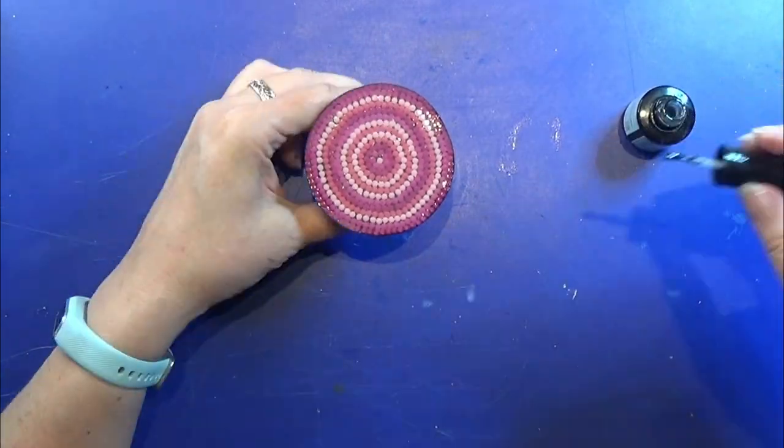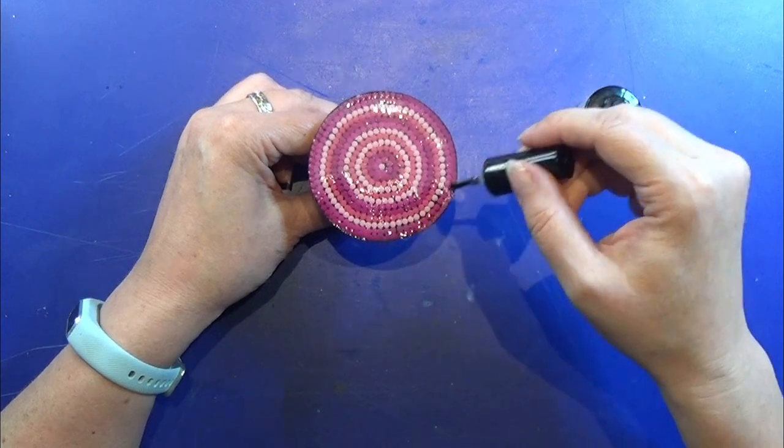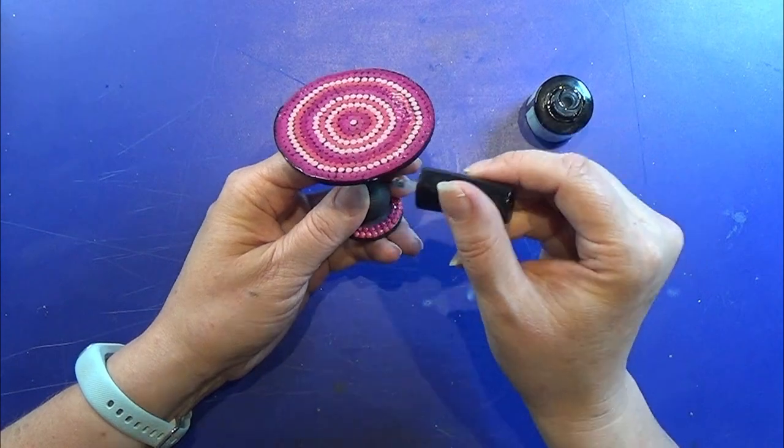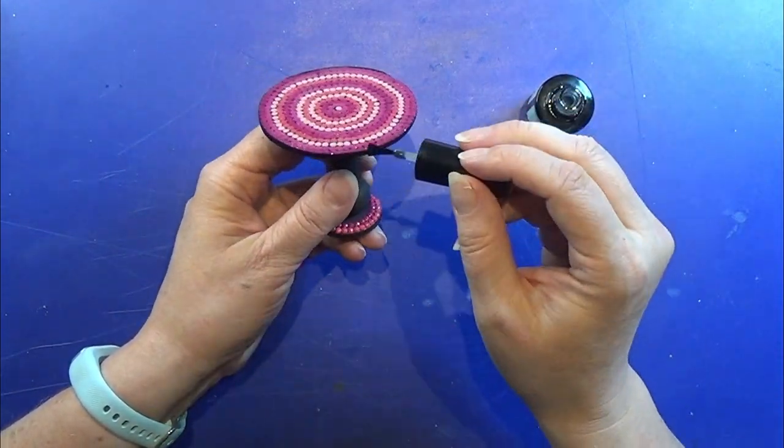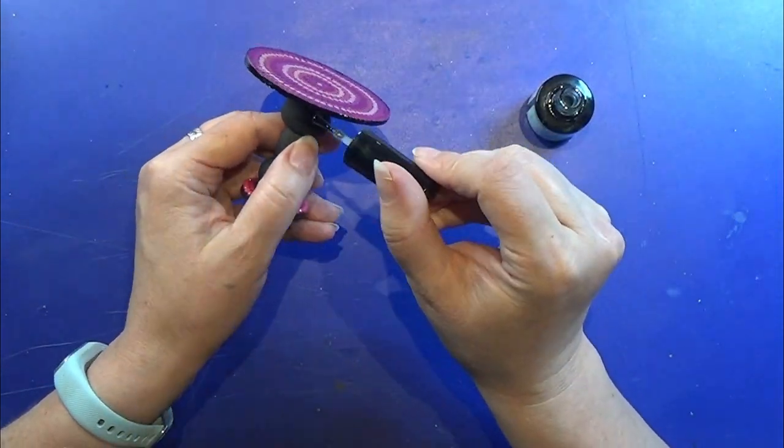When it's all dry I am using this really thin UV resin to put on the table to make it really shiny again after I sanded it. I am doing it on the top surface and on the sides and then I am just placing it under my lamp until it's really hard.